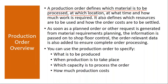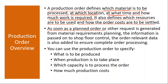A production order defines which material is to be processed, at which location, at what time, and how much work is required. Basically, a production order is like giving a request to the production team to start manufacturing. Without a production order, they will not start production — it's a pre-requisite. In the production order you have which material is to be produced, at which location, your work centers, machines, timings, planned start date, start time, planned finish date, and finish time.